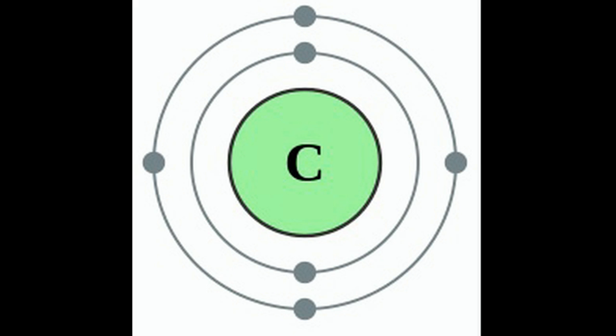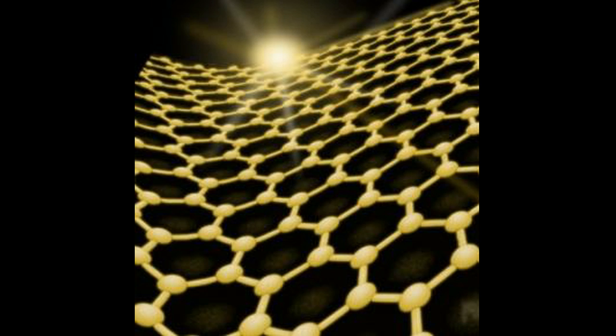Carbon atoms typically have 6 electrons, 4 electrons in the outer shell and 2 in the inner shell. In graphene, each carbon atom is bonded to three other carbon atoms, leaving one electron free for electronic conduction.